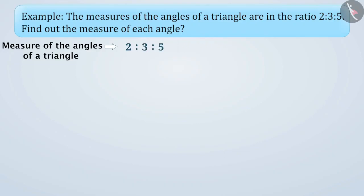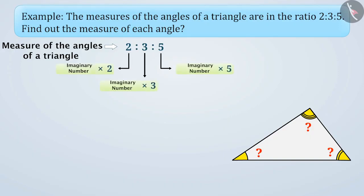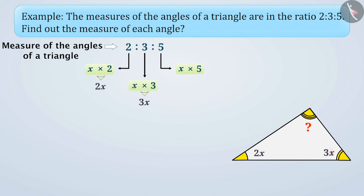From a ratio, we are not able to know the exact measure. From this ratio we do not know the exact value of the measure of the angle. If we multiply an imaginary number with the given ratios, then we can find the measure of each angle of the triangle. Suppose this imaginary number as x. Based on this, we can say that the measures of the angles of the triangle are 2x, 3x, and 5x.